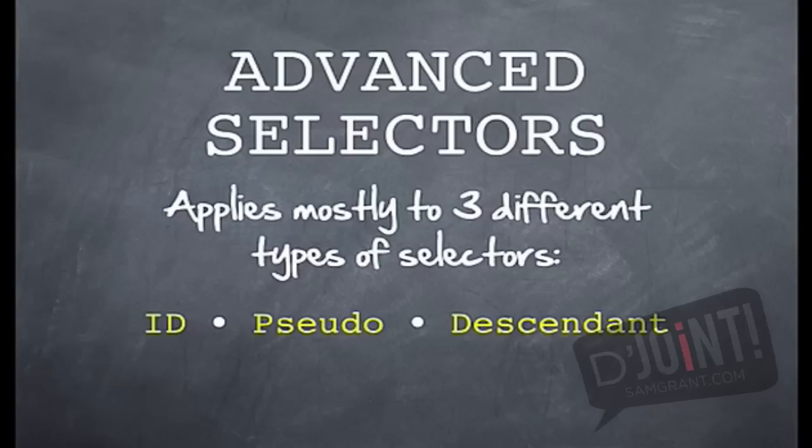The first one is ID. The second one is pseudo. And the third one is descendant. We're going to take these one at a time so we can explain as to when the best time is to use each one.